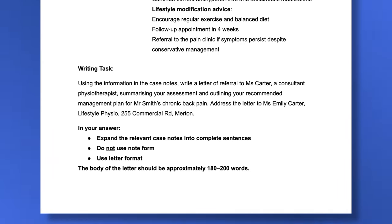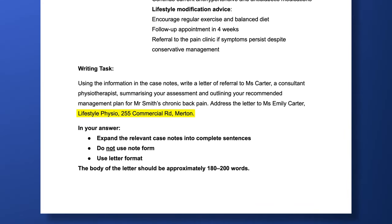Let's go ahead and see how you could write a letter to address this task. We start by copying the address from the writing task and arranging it in the top left corner of the letter. Notice that each separate part of the address is on a new line — first the name of the person you're writing to, then the name of the clinic, then the street address and the town or suburb. Notice also that there are no punctuation marks in this format.